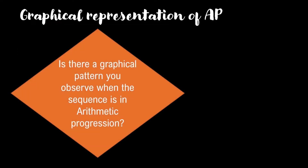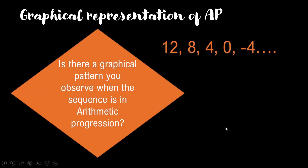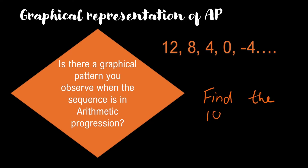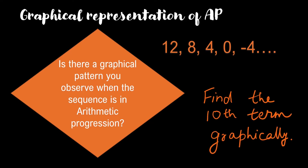Is there any graphical pattern you observe when the sequence is in arithmetic progression? We have numbers already in arithmetic progression: 12, 8, 4, 0, minus 4 and so on. The first term is 12, second term is 8, third term is 4 and so on. Think about how you can plot the 10th term graphically. Pause the video and think about that.